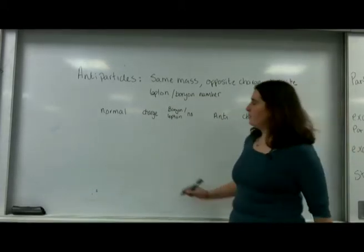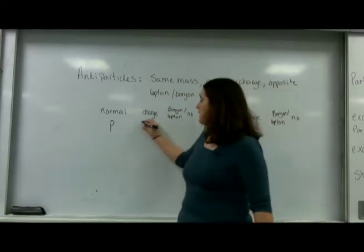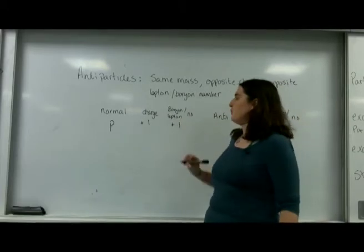I'll give you an example. The normal particle for a proton is the letter P. It has a charge of plus one and its baryon number, of course, also is plus one.